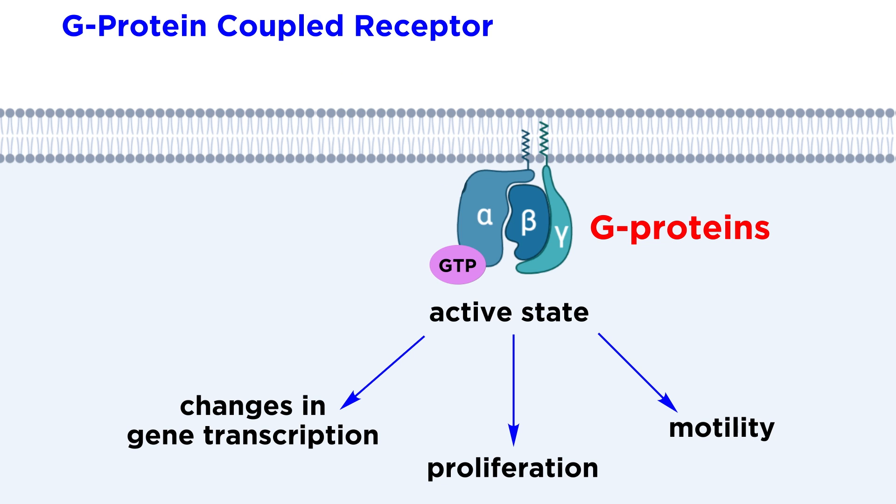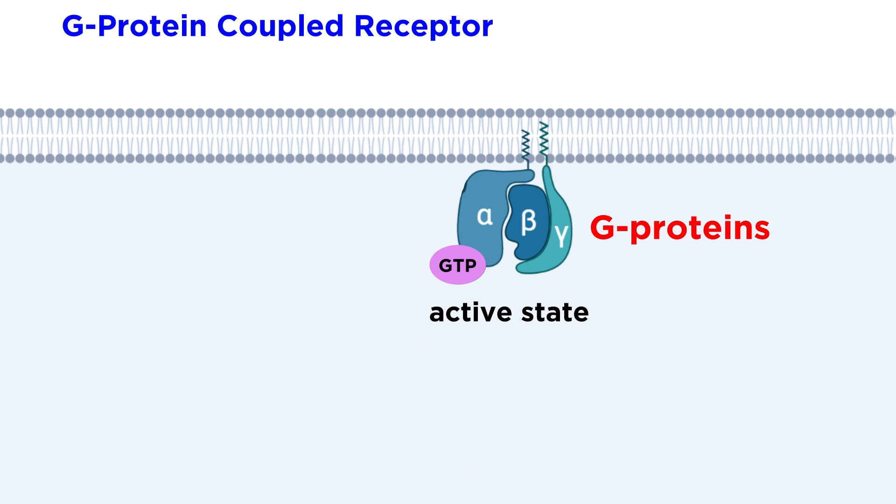The activated G protein subunits then activate multiple pathways throughout the cell, including motility, proliferation, and changes in gene transcription. Eventually, the GTPase converts GTP to GDP, rendering the enzyme inactive again.